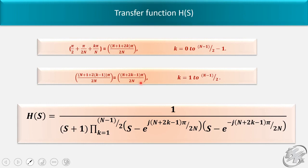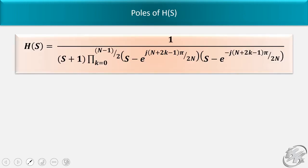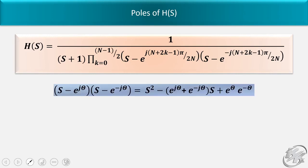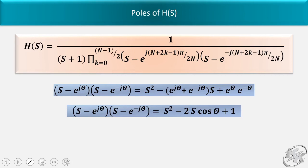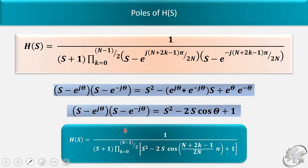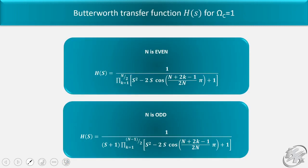Simplifying the angle formula with π common and LCM 2n gives (n + 1 + 2k)π/(2n). Changing variable k to k-1 so k ranges from 1 to (n-1)/2, the final angle becomes (n + 2k - 1)π/(2n). For remaining poles, we have e^(j(n+2k-1)π/(2n)) and its conjugate e^(-j(n+2k-1)π/(2n)), which multiply to give s² - 2s·cos(θ) + 1. The final transfer function H(s) for odd n is derived as shown in the figure.